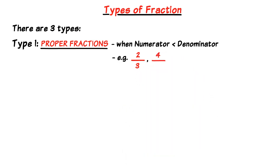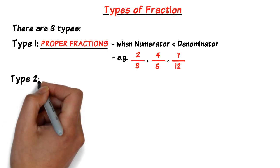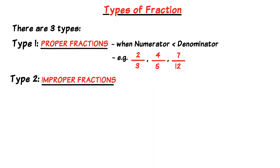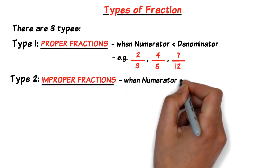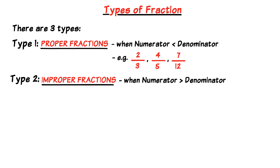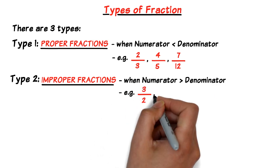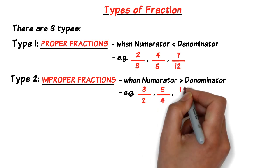We can have 4 over 5 or 4 fifths. Or we can have 7 over 12 or 7 twelfths and so on. Type 2, these are called improper fractions. Now this is when the top number or the numerator is greater than or bigger than the bottom number or denominator. For instance, 3 over 2 or 5 over 4 or even 12 over 7.